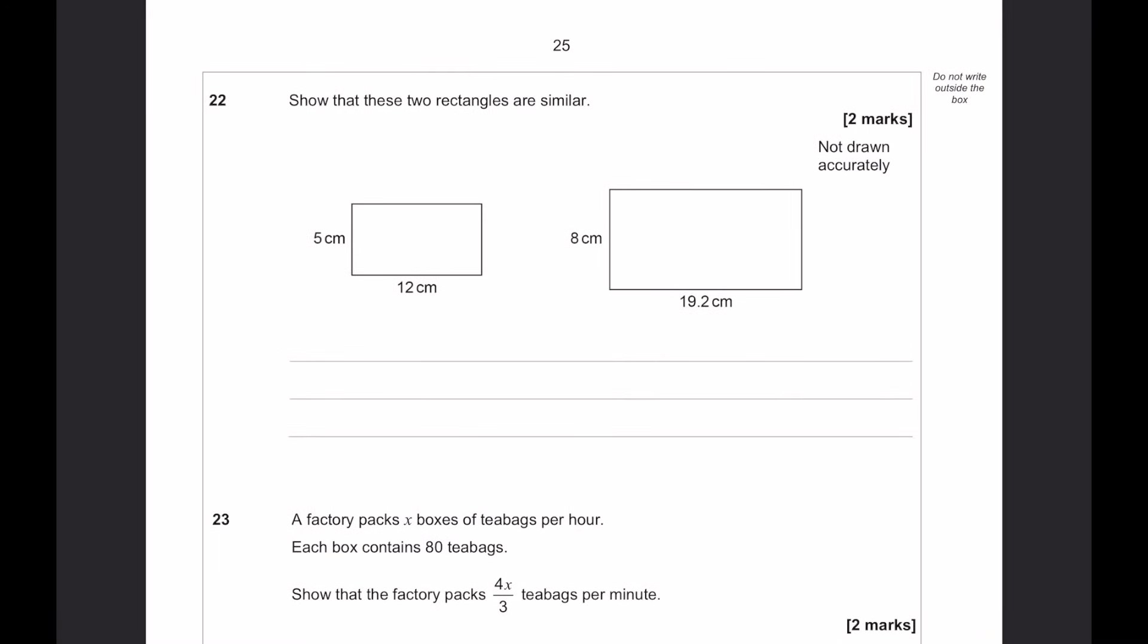Show that these two rectangles are similar. The way we do that is we look for scale factors. Whenever you see similar shapes, scale factors. The way to test for similarity is to make sure these dimensions are in the same proportion to each other. So, the height on both of them is the same proportion as the width increase. Now, the way we can do that is work out what number do you need to times 5 by to get to 8, and that is 1.6. And again, you can do that by doing 8 divided by 5 if you want to. And we can just double check that by doing 12 times 1.6. And that is, in fact, 19.2. So, these two shapes are similar.